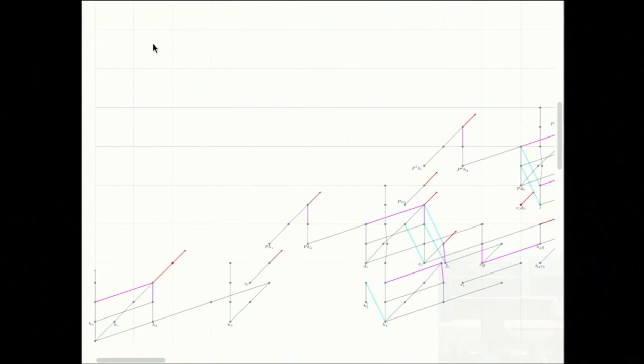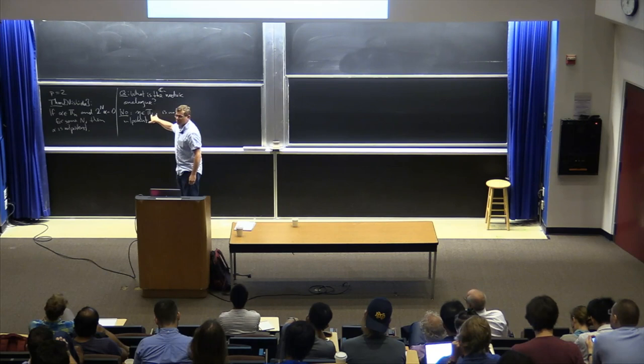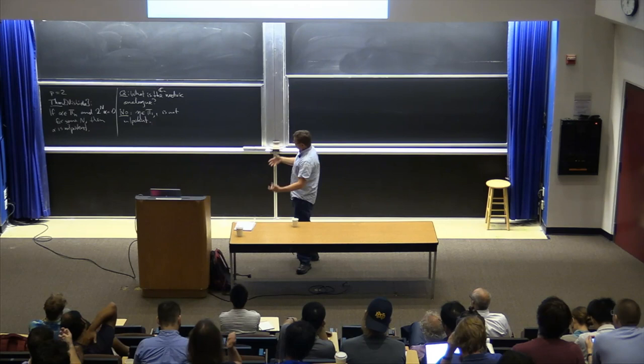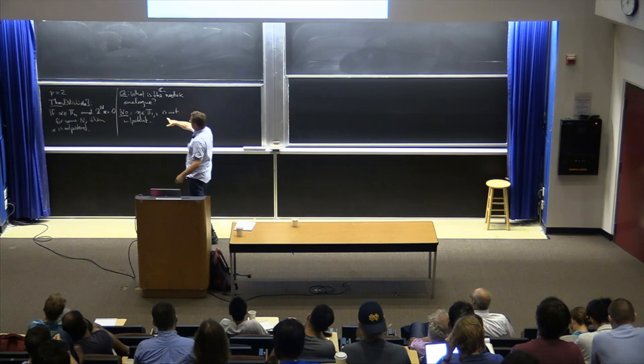I'm not going to cover the background of motivic homotopy theory today. One feature of motivic homotopy theory is that it has an extra grading — it's an enrichment of classical homotopy theory, much like equivariant homotopy theory, with this extra grading. So eta is not nilpotent.